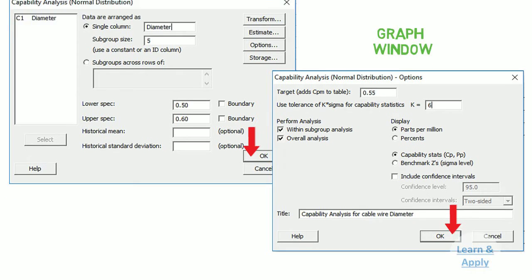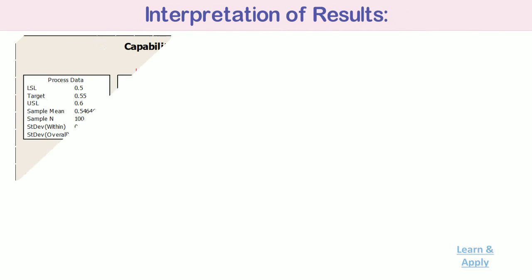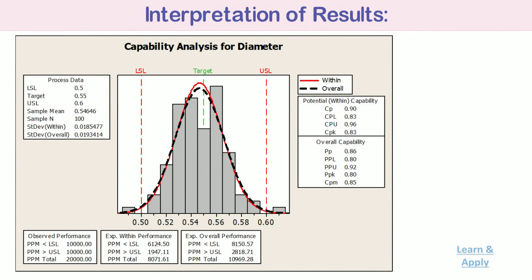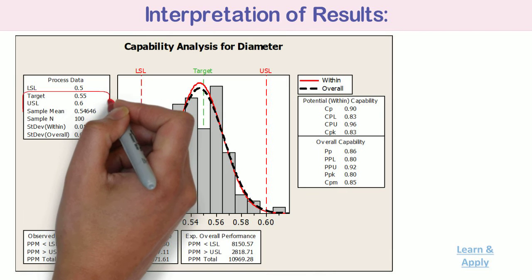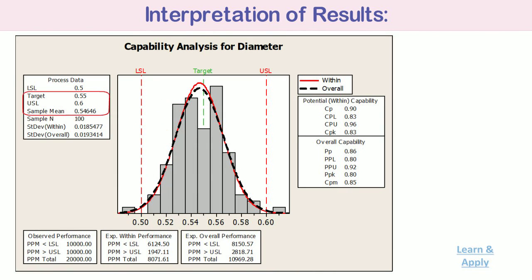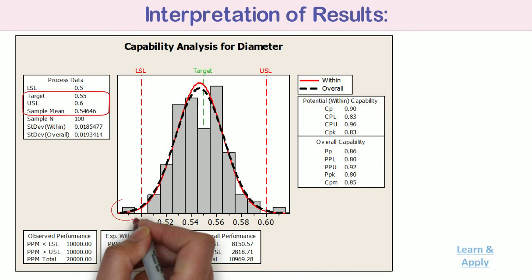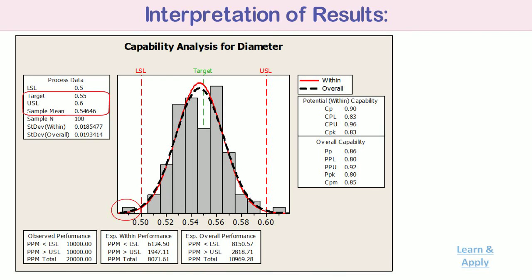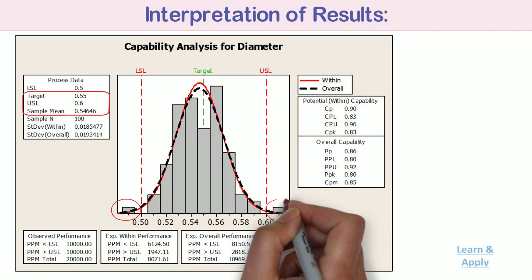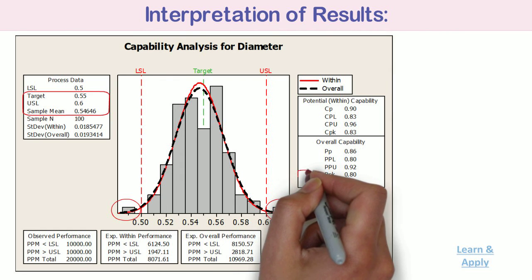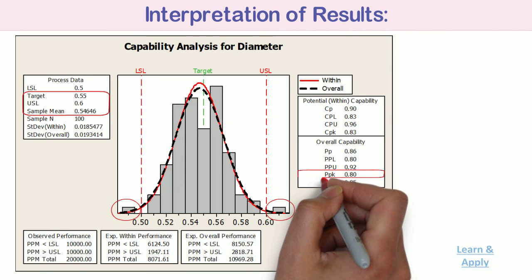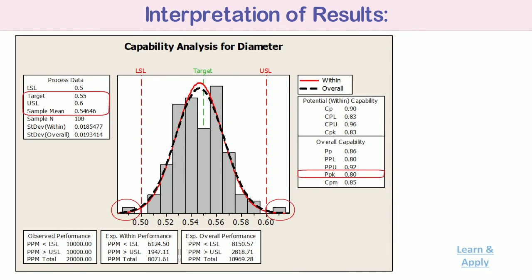Interpretation of results: Your data appears to have followed a normal distribution as shown by the histogram overlaid with a normal curve. But you can see that the process mean of 0.54646 is slightly short of the target of 0.55 and both the tails of the distribution fall outside the specification limits. This means you will sometimes see cable diameters less than the lower specification of 0.50 cm or greater than the upper specification of 0.60 cm. The PPK index indicates whether the process will produce units within the tolerance limits. Here, the PPK index is 0.80, indicating that the manufacturer must improve the process by reducing variability and centering the process on target.